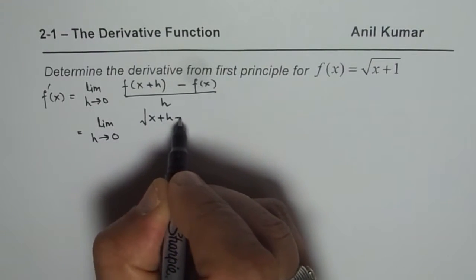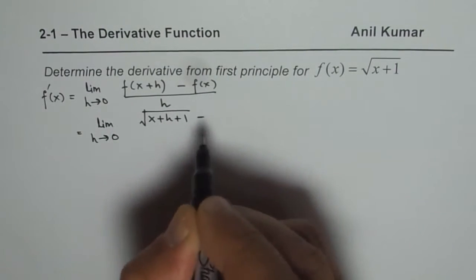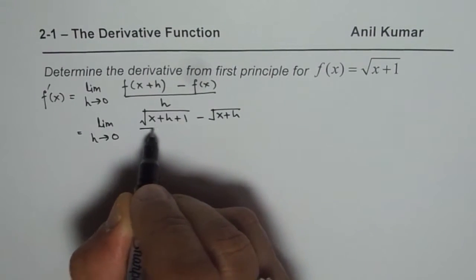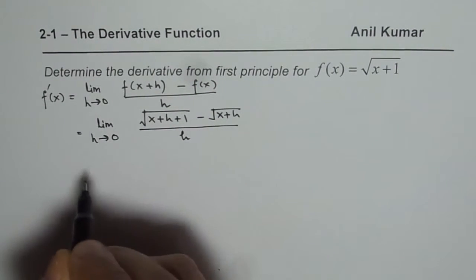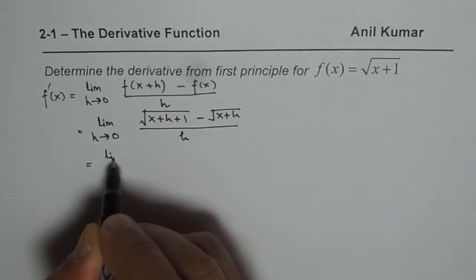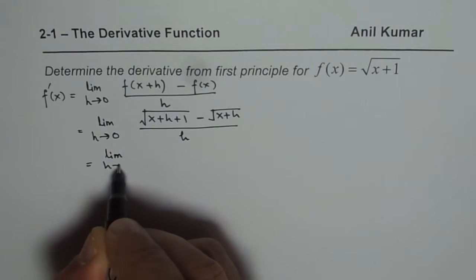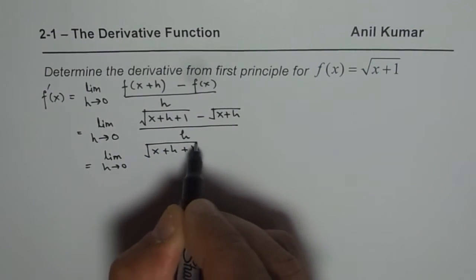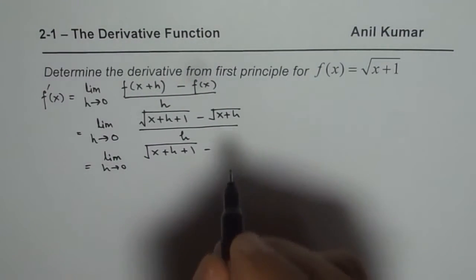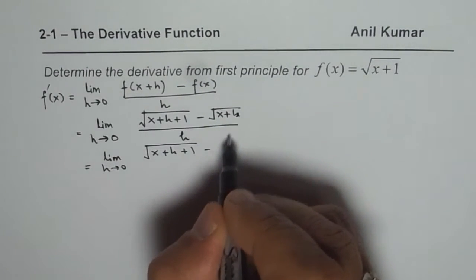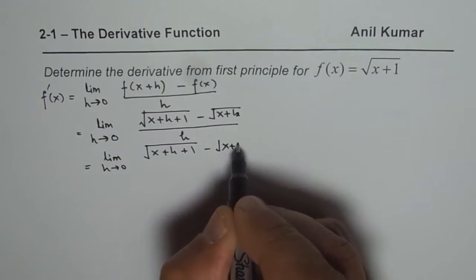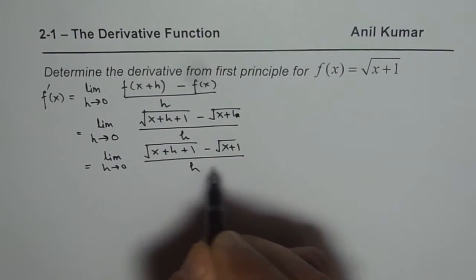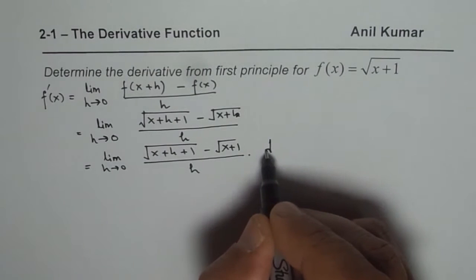So it is the limit as h approaches 0 of [square root of (x plus h plus 1) minus square root of (x plus 1)] over h. To solve such an equation you need to rationalize, so let's rationalize.